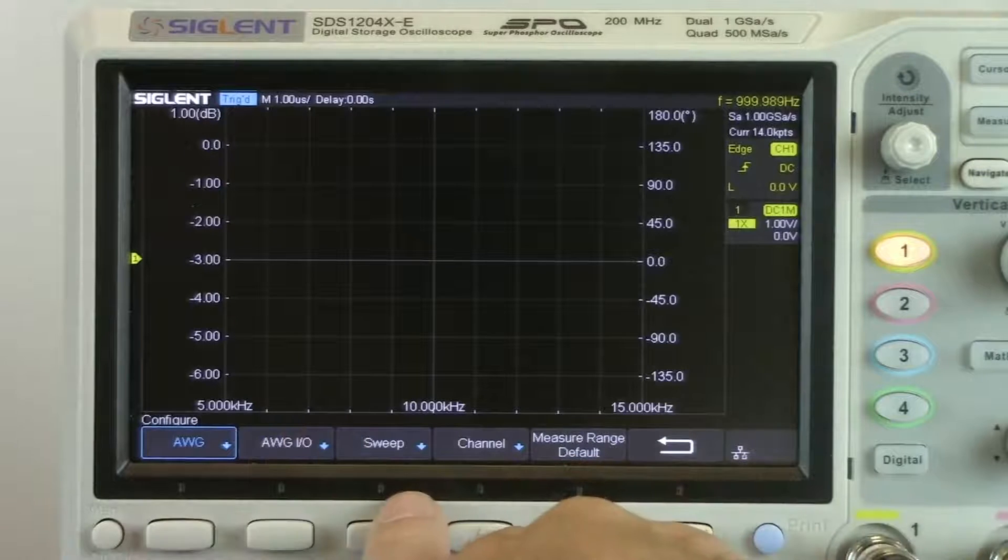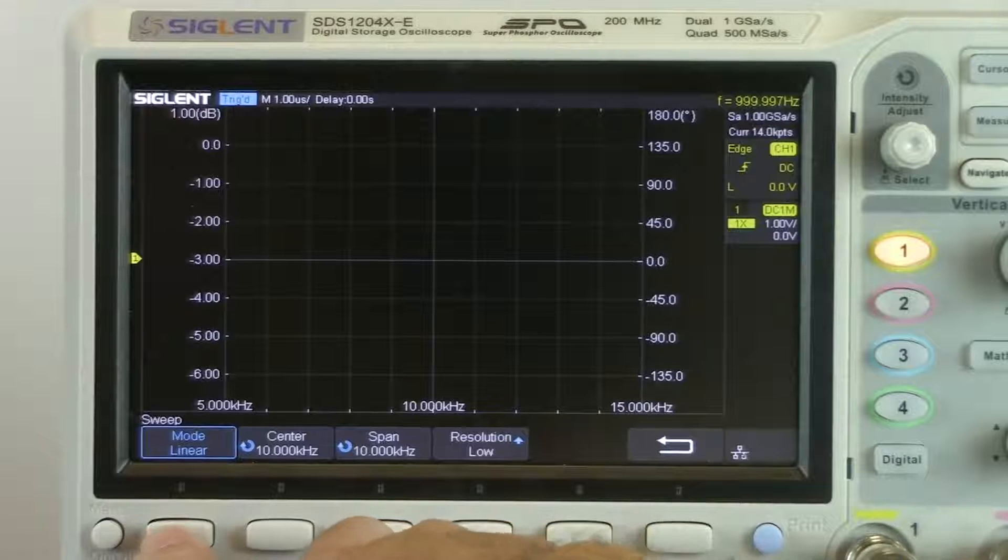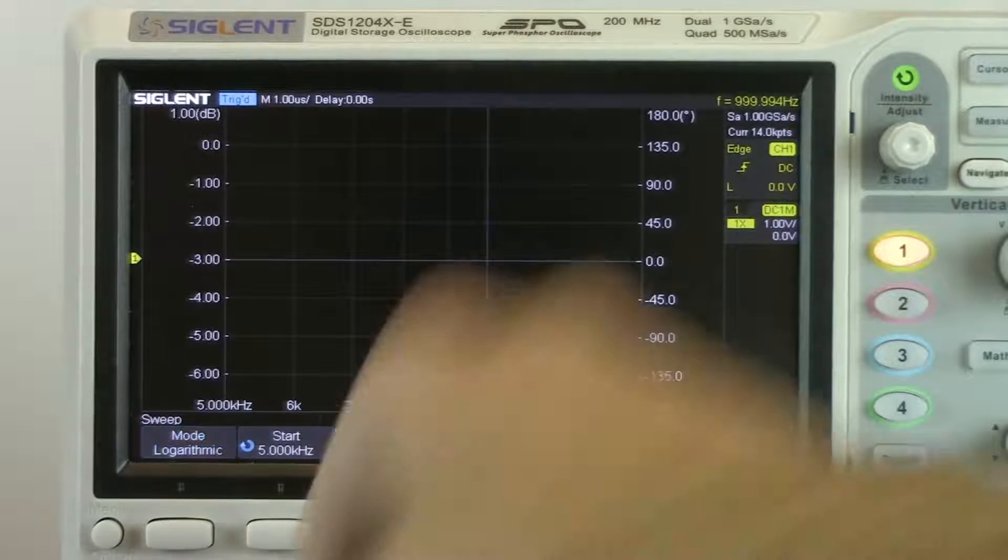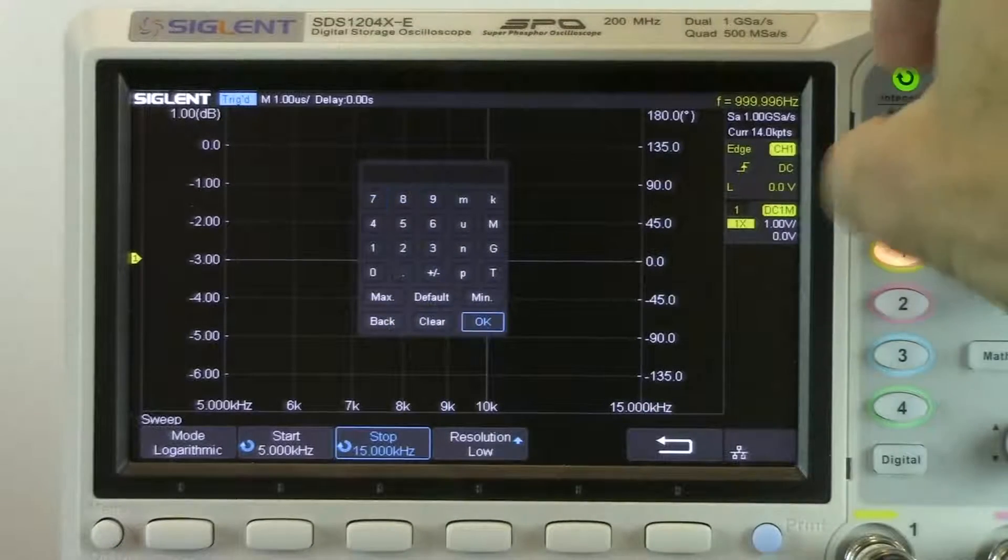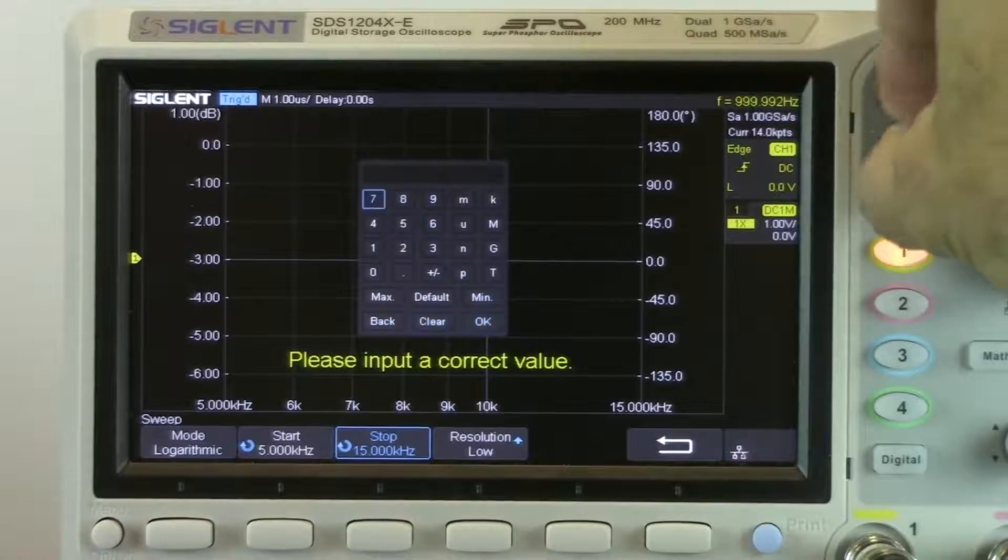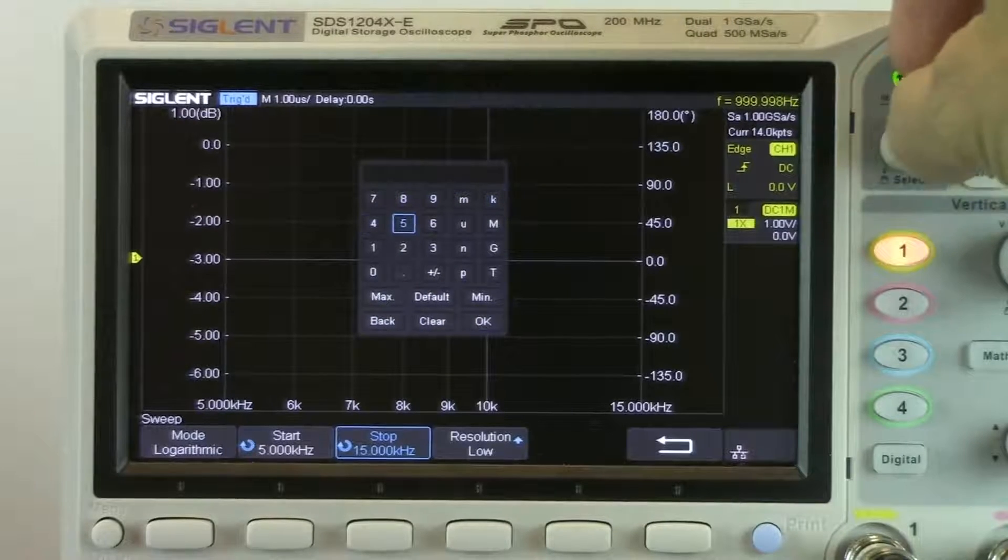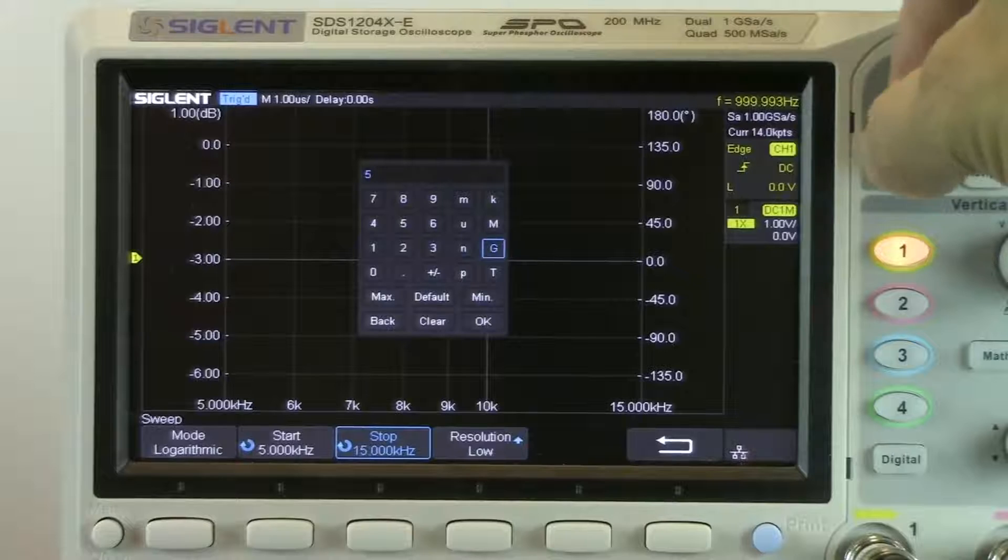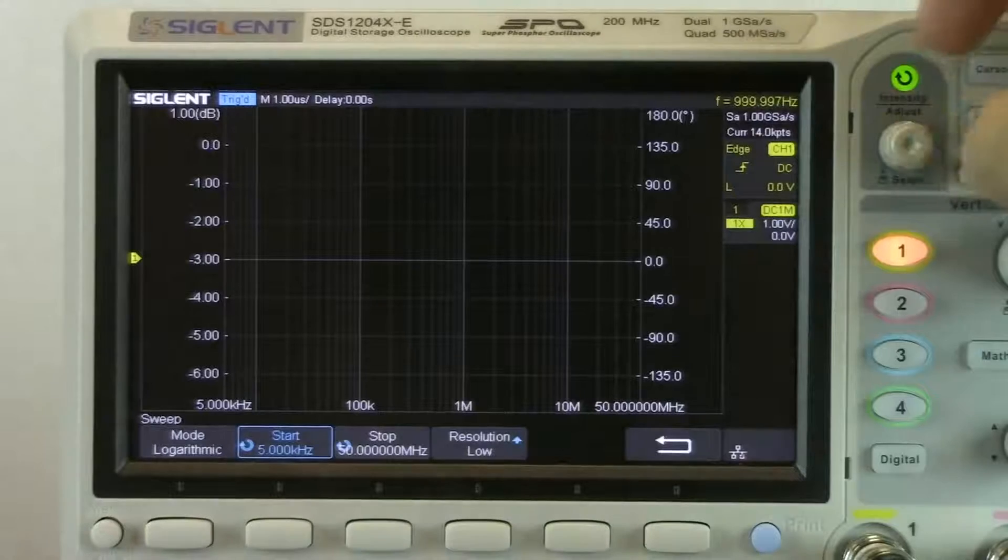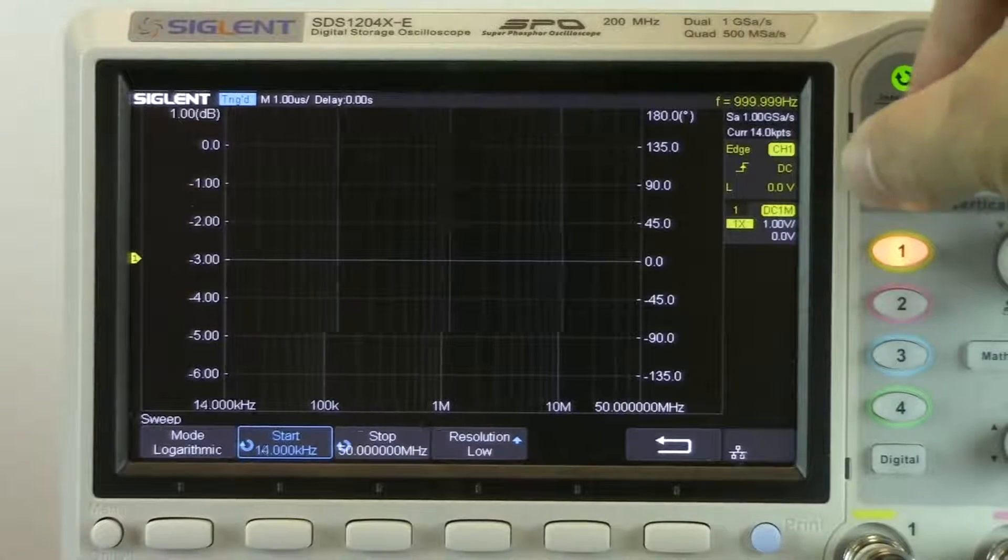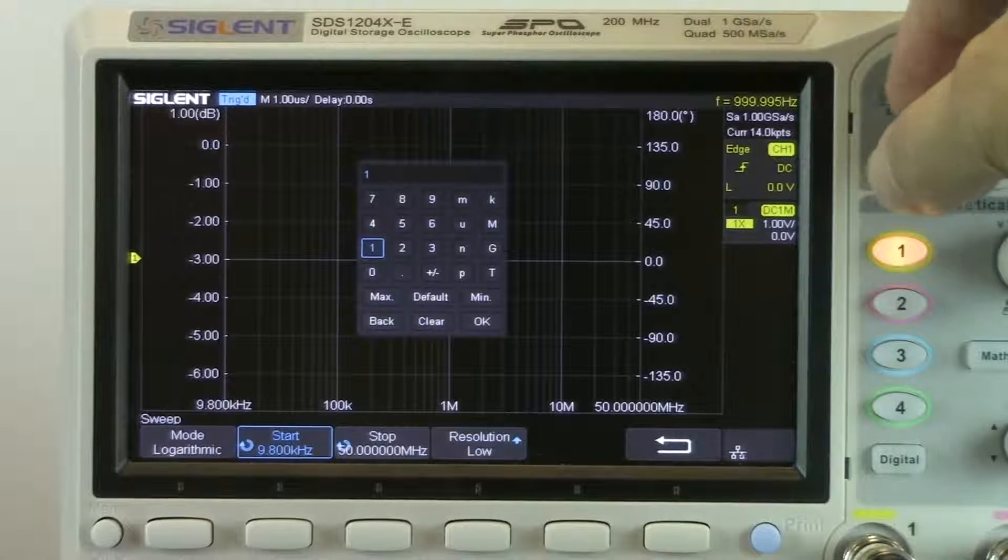We also have the sweep values. So sweep, we can configure the sweep type. We're going to do logarithmic. And I'm going to set the stop value to 50 meg. So you can adjust by just rotating the knob, but you can also bring up the keypad by pressing the intensity knob in. So we'll go 50 meg.